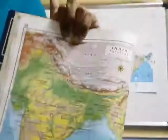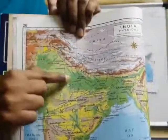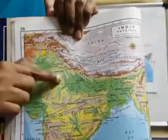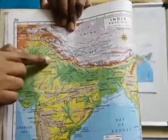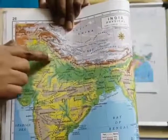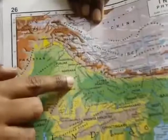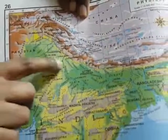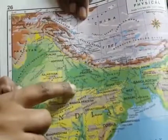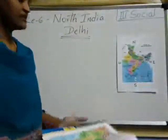And also, Delhi is located here. If you look here, this is the river — Yamuna. So Delhi is mainly located along the banks of river Yamuna. Can you see here? This is Yamuna. Delhi is located along the banks of river Yamuna. Have you understood now?